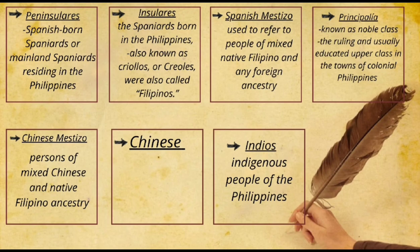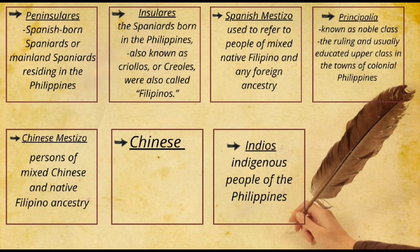Peninsulares were Spanish-born Spaniards or mainland Spaniards residing in the Philippines. The insulares, also known as criollos, were Spaniards born in the Philippines, also called Filipinos. A mestizo — masculine mestizo, feminine mestiza — referred to people of mixed native Filipino and any foreign ancestry, which is why they were called Spanish mestizos. The principalia or noble class was the ruling and usually educated upper class in colonial Philippine towns, composed of the gobernadorcillo and the cabezas de barangay who governed the districts.